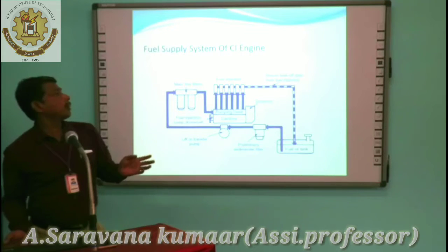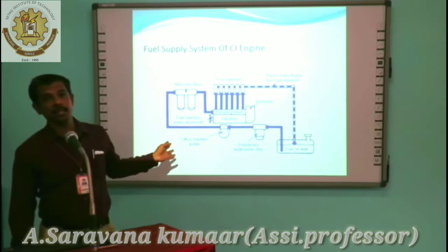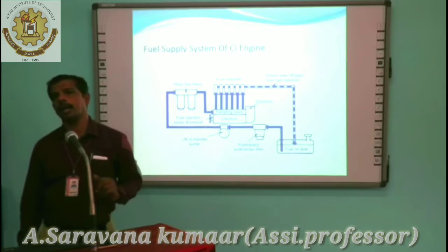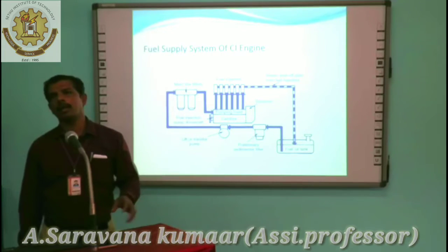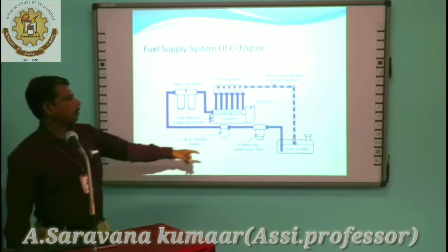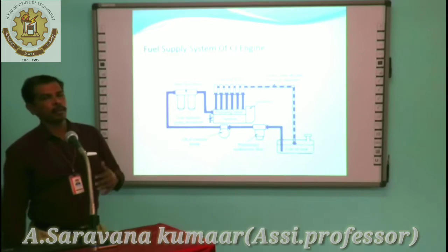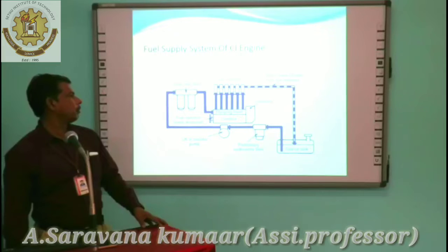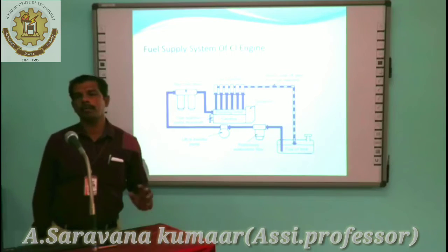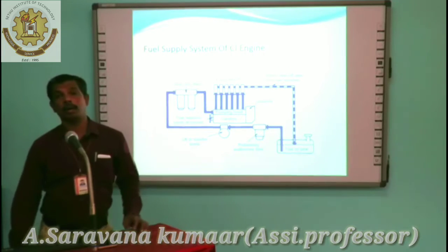Here is the system of a CI engine. We have already seen the SI engine structure. In the compression ignition engine, the air is compressed in the cylinder at high temperature, and fuel is applied through an atomizer or injector. The fuel from the fuel tank enters into the primary filter. After the primary filtering, it enters into the fuel injection pump, then through primary and secondary filters, and then into the fuel injection pump.